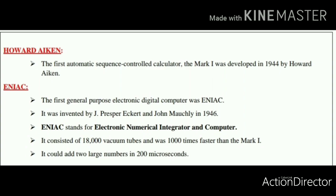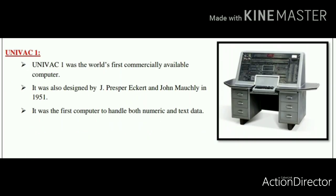It was named the Electronic Numerical Integrator and Computer, also known as ENIAC. It consists of 18,000 vacuum tubes and was a thousand times faster than Mark I. It could add two large numbers in 200 microseconds.